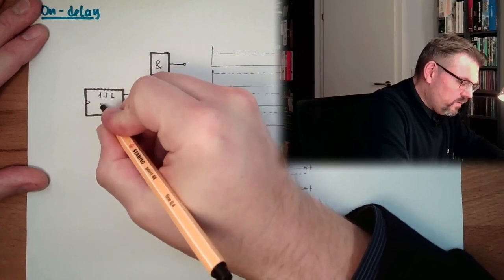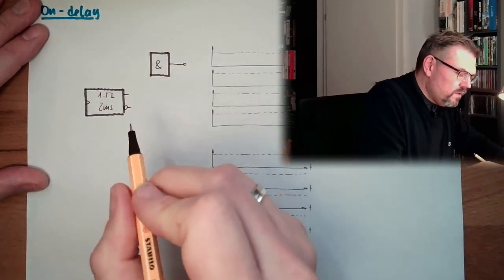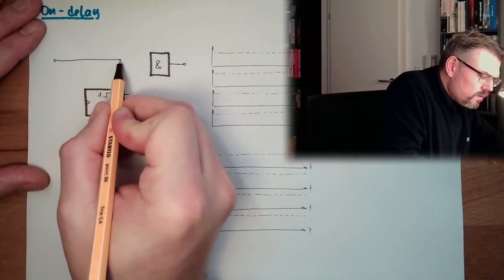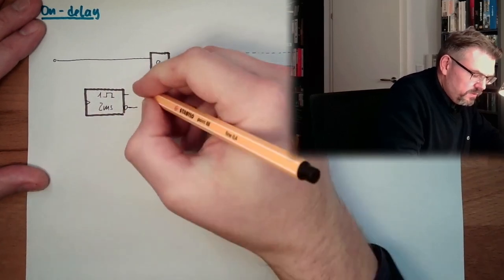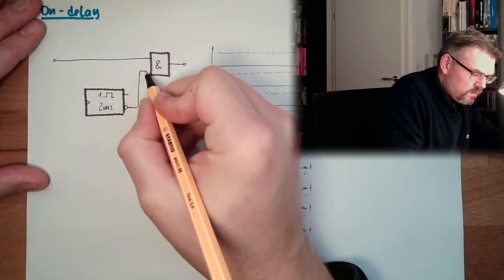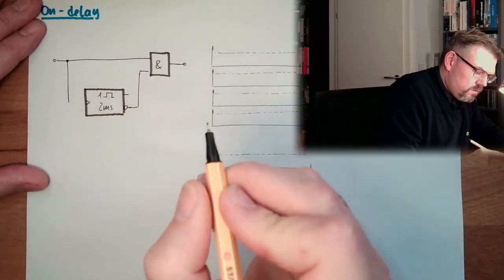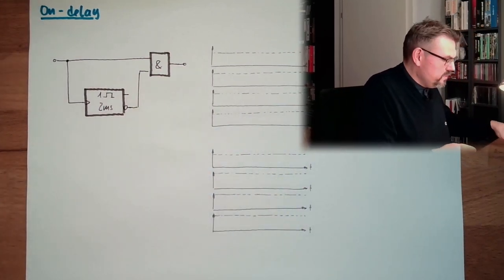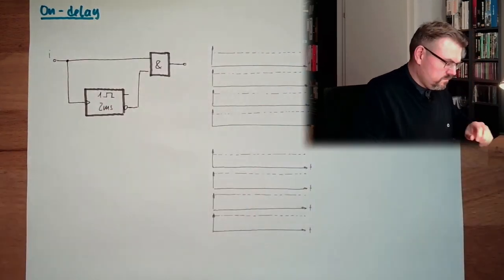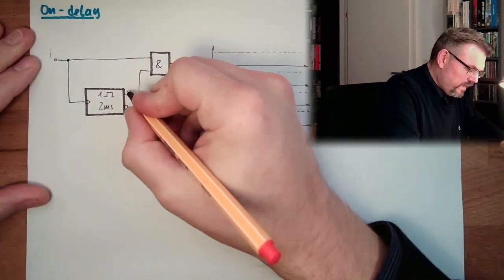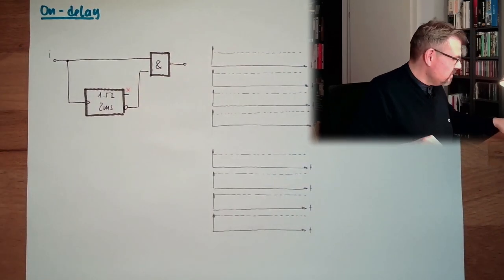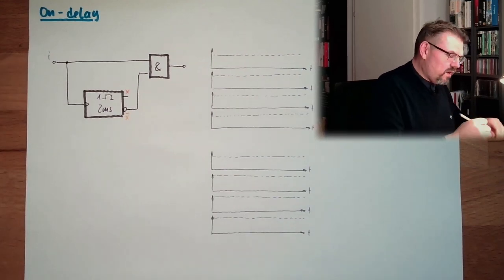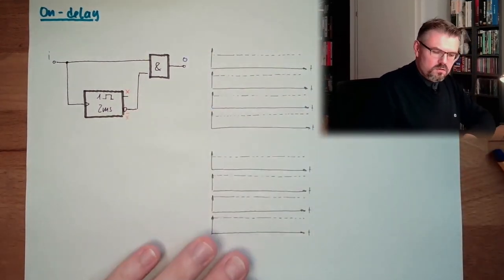This is the time element, let's say two milliseconds. And here is the input. And actually what we do is we do it like that. So this is the input signal I, this is X the output, this is NOT X the inverted output of the time element, and this is the output of the whole logic.